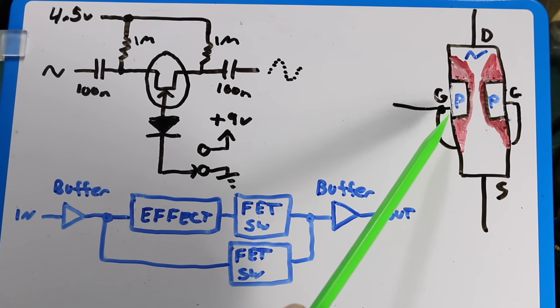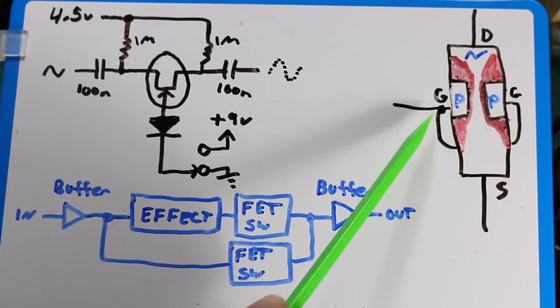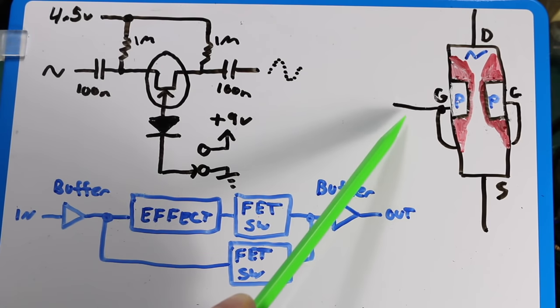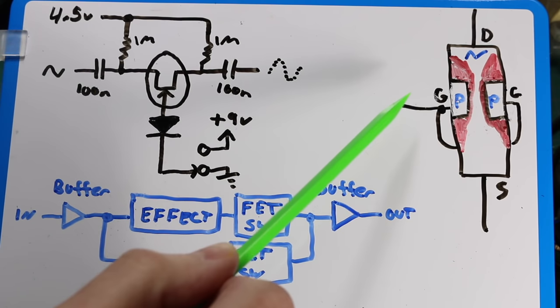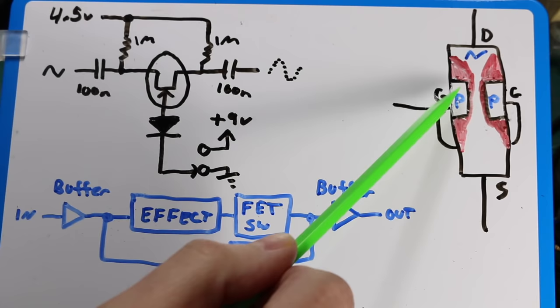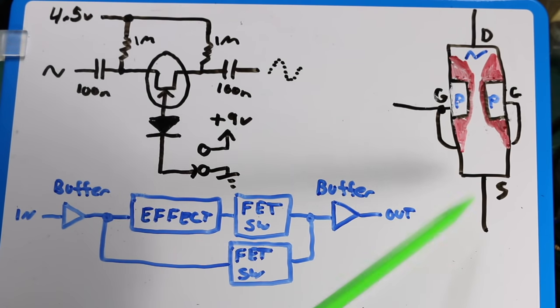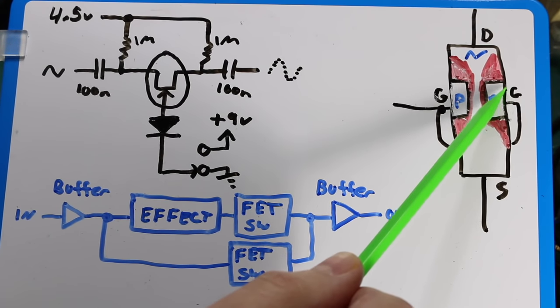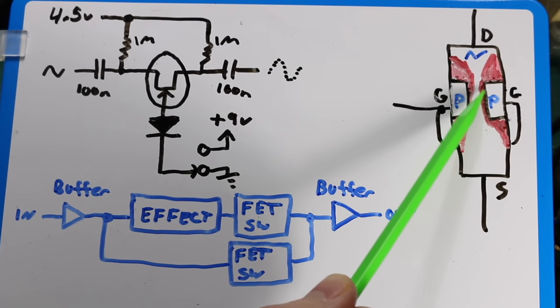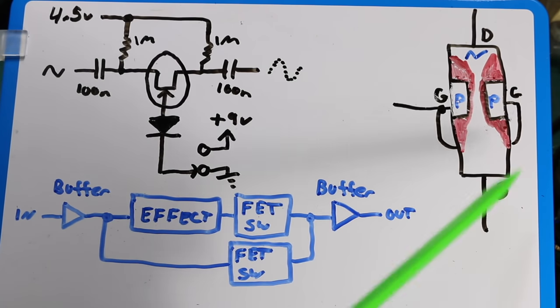For the N-channel JFET, where the gate is P-type material, if you apply a negative voltage on the gate relative to the source, so let's say the source is connected to ground, if you bring the gate to minus one, two, three volts, and so on, you will be reverse biasing this P-N junction more and more, enlarging the depletion area from the gate and closing off the available conduction path from drain to source.